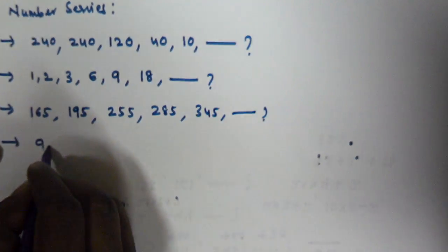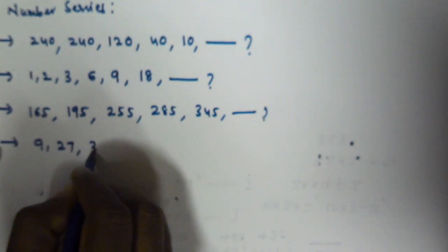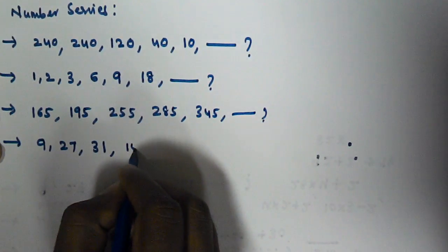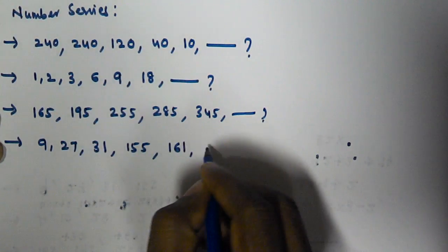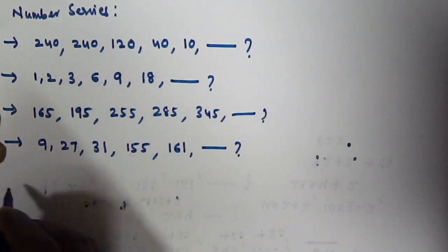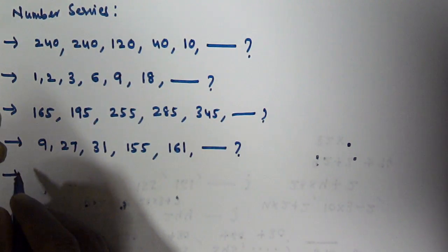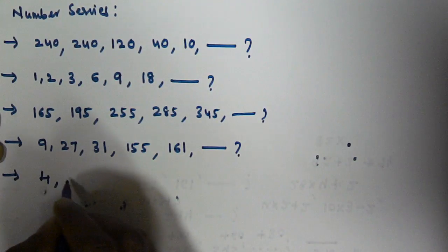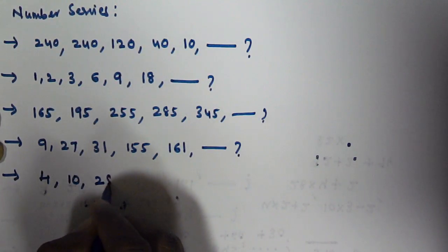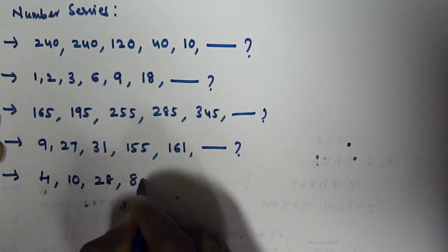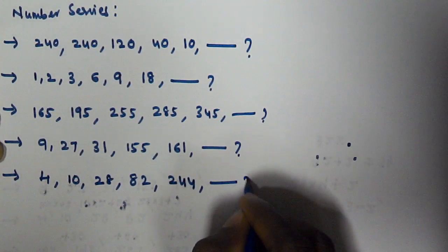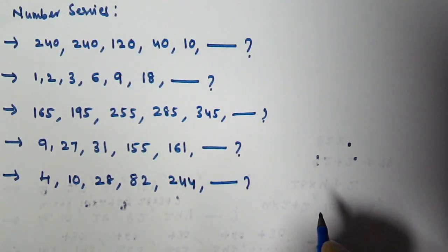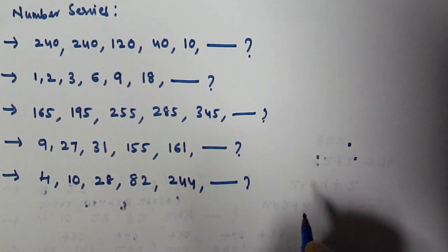The next problem is 9, 27, 31, 155, 161 — and then what number comes next? And the last problem is 4, 10, 28, 82, 244 — and then what number comes next? We will see these 5 problems in this video.